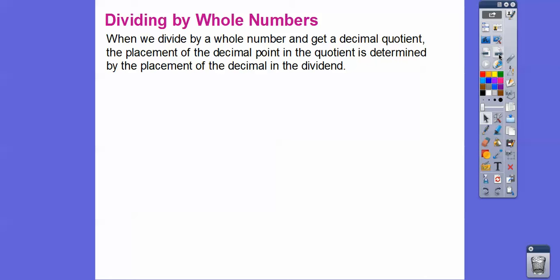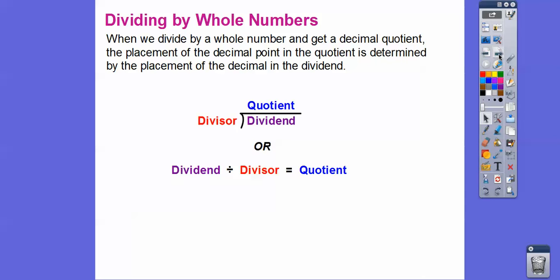When we divide by a whole number and get a decimal in the quotient, the placement of the decimal point in the quotient is determined by the placement of the decimal point in the dividend. So when we're dividing by a whole number as the divisor, the decimal in the quotient is directly above the decimal in the dividend.